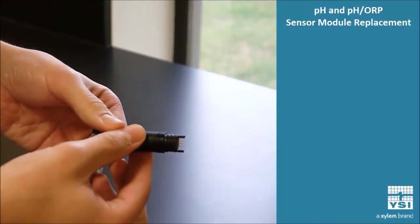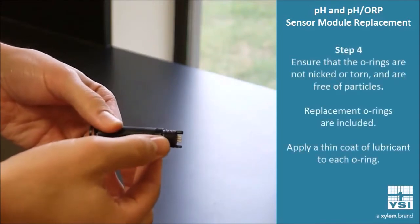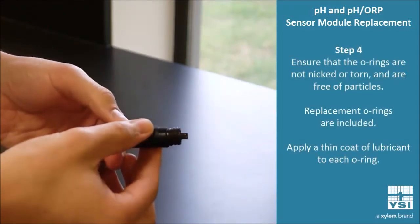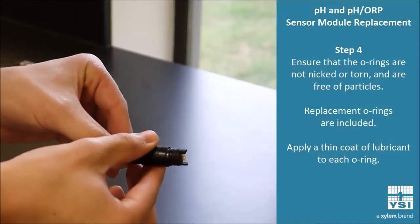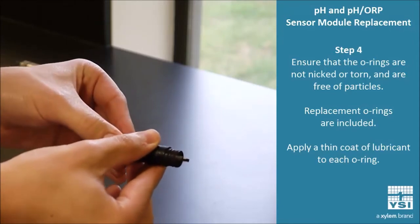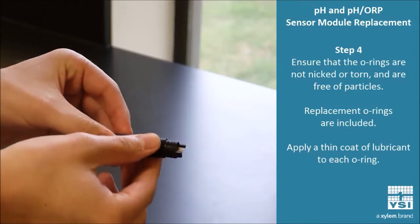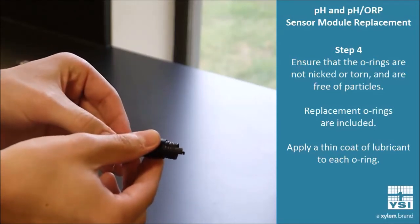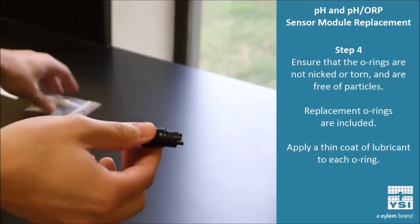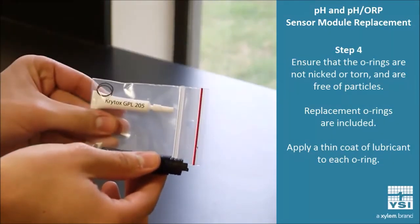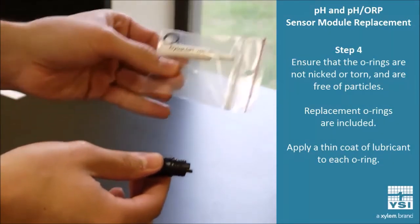So step four is to inspect these O-rings at the bottom. You want to make sure that there's no nicks, no issues with that guide, no contaminants, no particles, anything like that. So just keep it nice and clean. And in addition, you want to have a nice light coat of Krytox grease placed right around those O-rings.